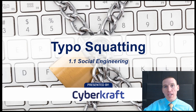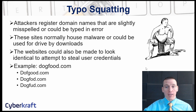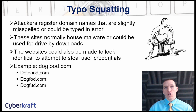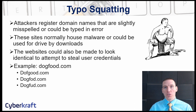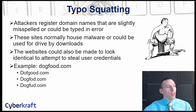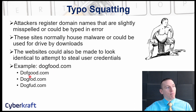Typo squatting is a form of social engineering most commonly associated with phishing. This is where an attacker registers a domain name that looks very similar to an actual domain. For example, you could register dogfood.com instead of dogfood.com — you can have a typo like dofgood, or dogfood, or dogfood.com.